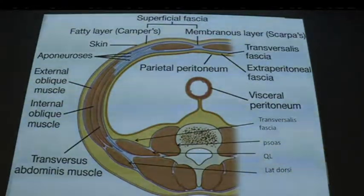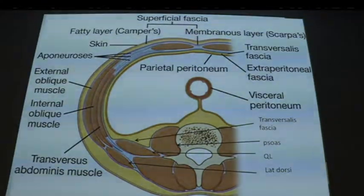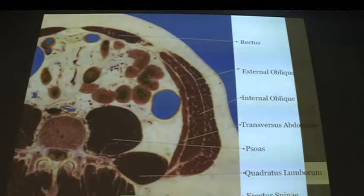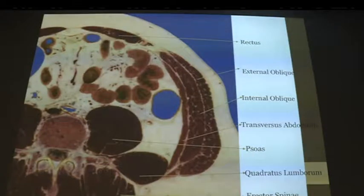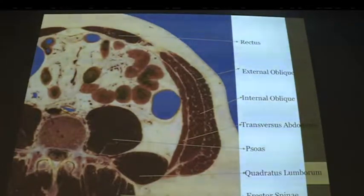Anteriorly to the quadratus lumborum you've got the big psoas muscle, and behind that the erector spinae group, and sometimes the latissimus dorsi muscle on the side as well. On cross-section around L3 you can see the psoas muscle, the quadratus lumborum muscle, and the erector spinae group — this is termed the shamrock appearance, and we'll see that on ultrasound as well. You've also got the rectus muscle and the three muscles of the lateral abdominal wall.